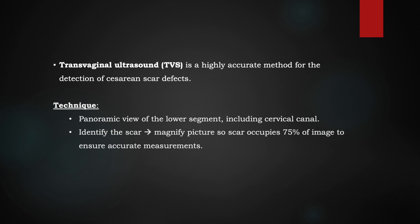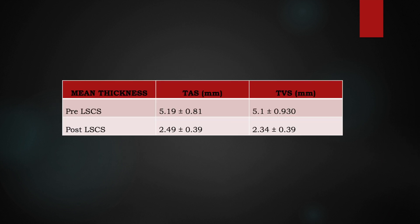Transvaginal ultrasound gives a more accurate measurement because we can see the scar beautifully and the anatomy is appreciated optimally. For this, we take a panoramic view of the entire cervical canal from the internal os to the external os, then magnify it such that the scar occupies more than 75% of the image. The mean thickness of the lower uterine segment in pre- and post-LSCS shows a small variation between transabdominal and transvaginal scans.